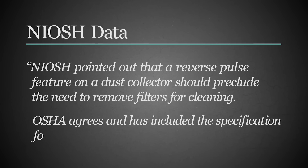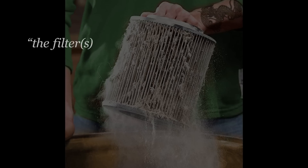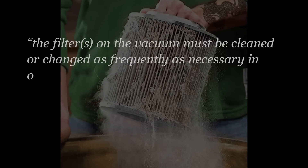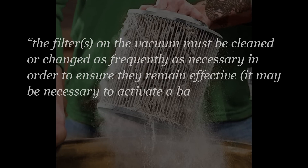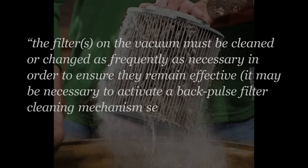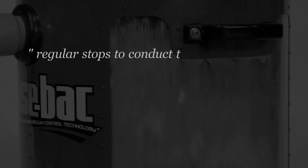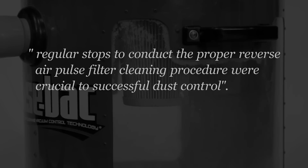OSHA agrees and has included the specification for a filter cleaning mechanism. When looking to define what is expected as far as the function of the filter cleaning mechanism, the following statement gives some insight: the filters on a vacuum must be cleaned or changed as frequently as necessary in order to ensure they remain effective. It may be necessary to activate a back pulse filter cleaning mechanism several times during the course of a shift, and regular stops to conduct the proper reverse air pulse filter cleaning procedure were crucial to successful dust control.